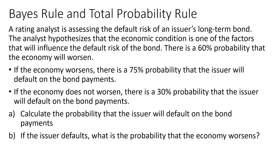In this video, we are going to look at an example on the application of Bayes' rule and the total probability rule. We have a rating analyst who is assessing the default risk of an issuer's long-term bond. The analyst hypothesizes that the economic condition is one of the factors that will influence the default risk of the bond.